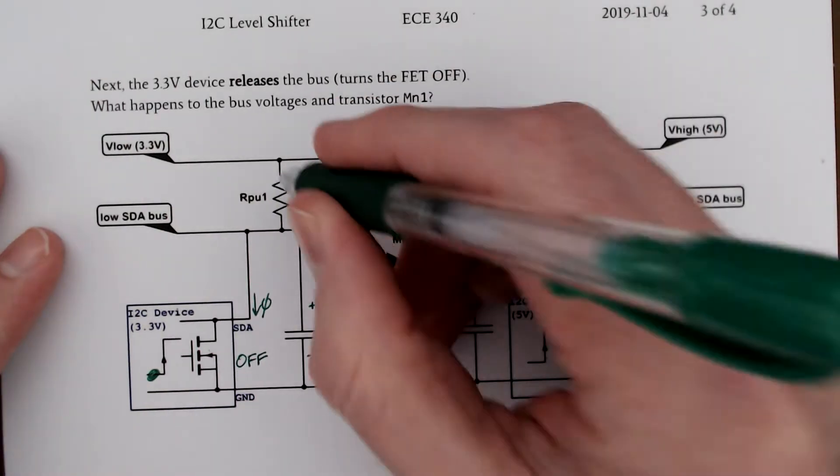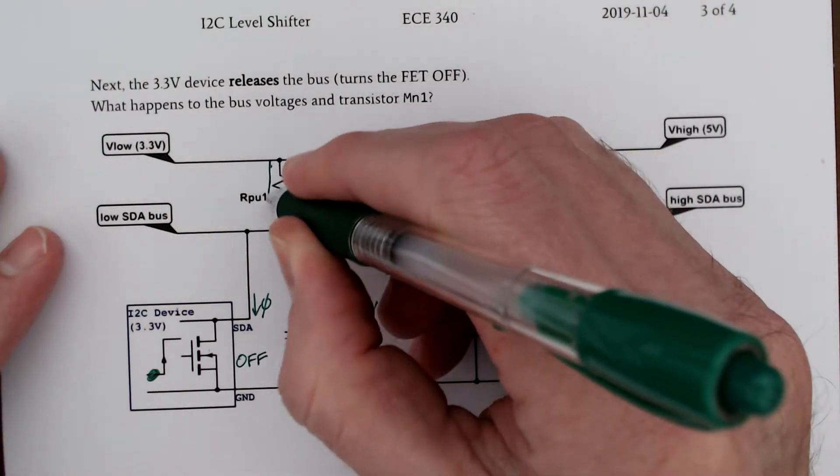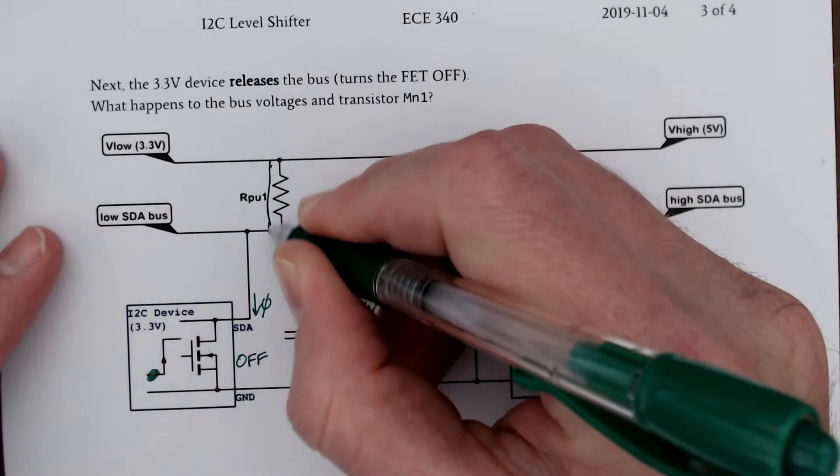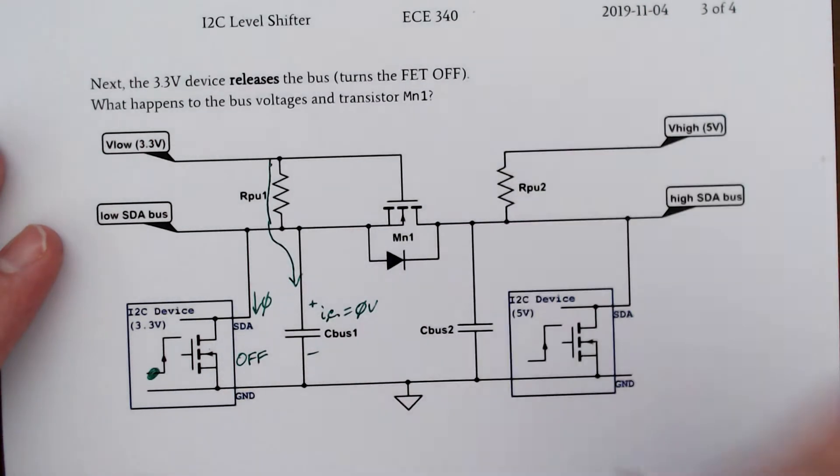And we have current that flows through our pull-up resistor, but it can't go to the left. It can go to the right though, and it can charge up our capacitor.